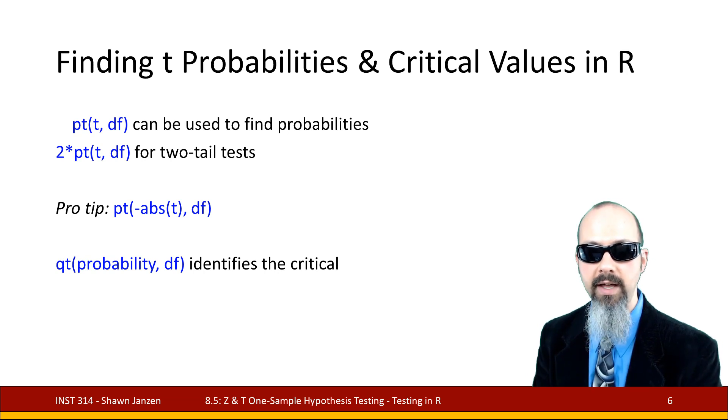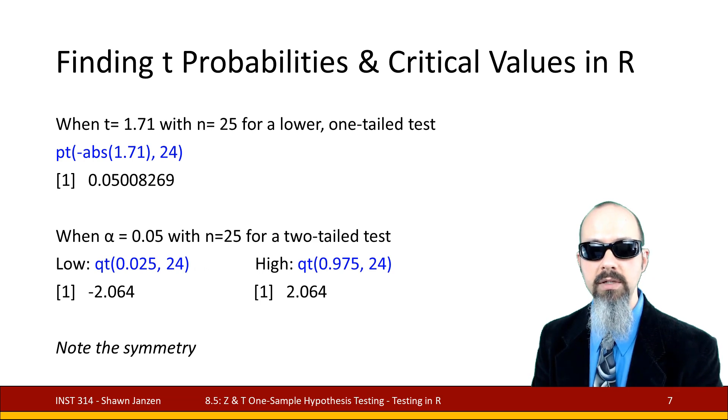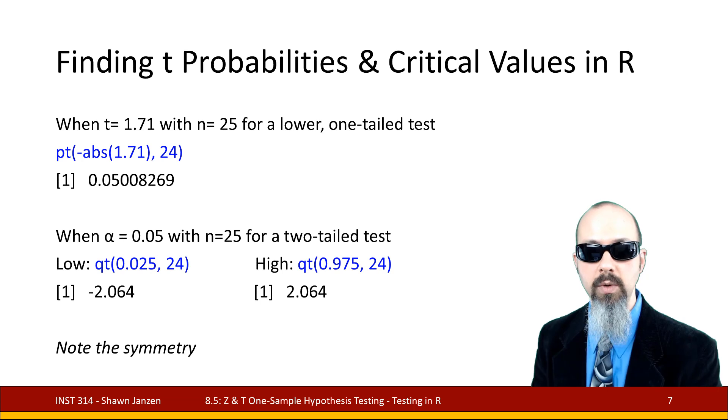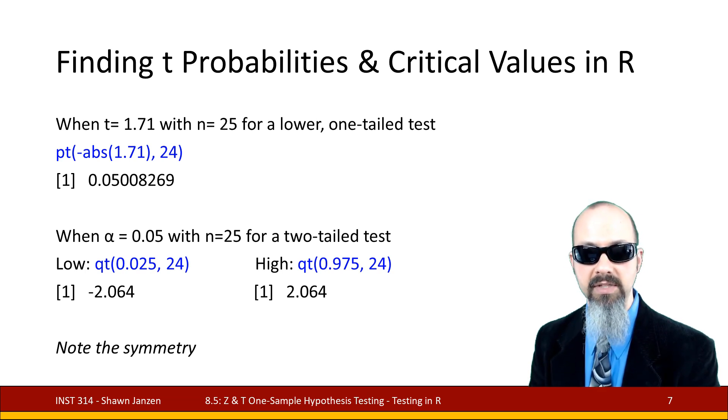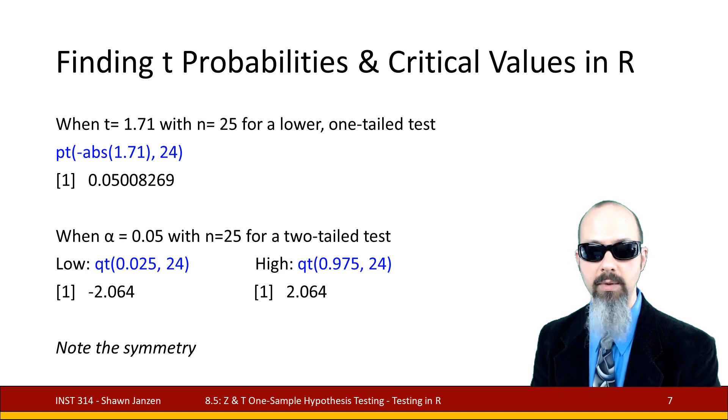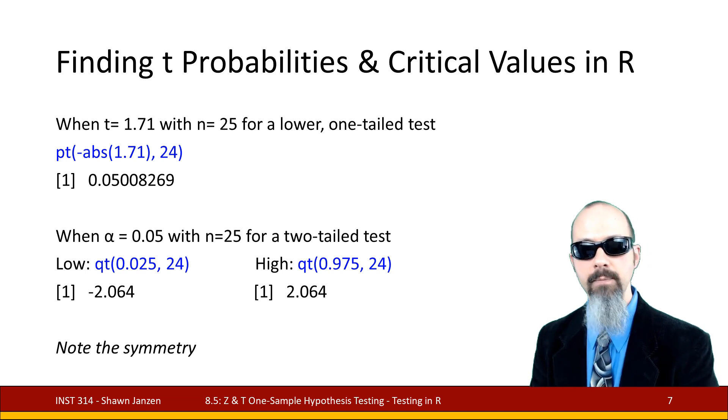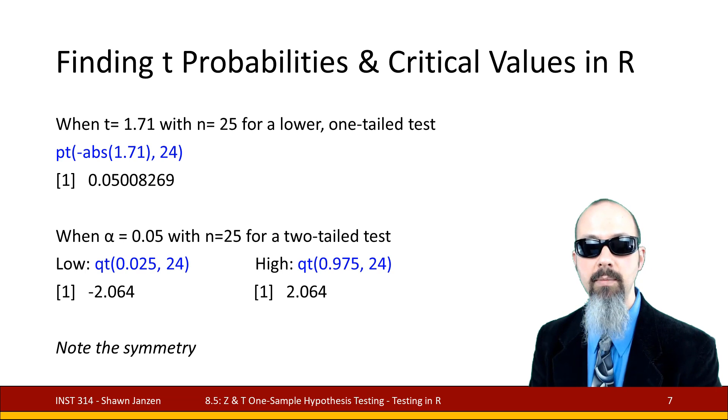So if we were to plug this in here, when we have a t-score of 1.71 with sample size 25 and we're doing a lower one-tailed test, I could do pt, absolute value of 1.71 comma 24, and it's going to give me the probability of 0.05. If I wanted to find out what the critical value could be with an alpha of 0.05 and sample size of 25, I can find the lower tailed test is going to be qt 0.025 comma 24, remember that 24 is the degrees of freedom, and a high value of qt 0.975 comma 24. Both of those are going to tell me negative 2.06 and positive 2.06.